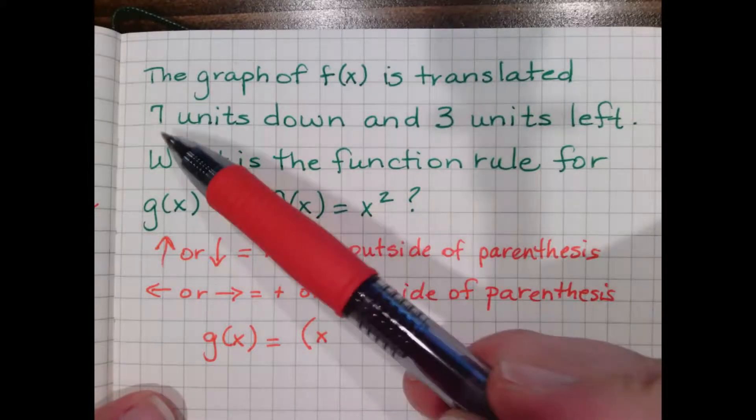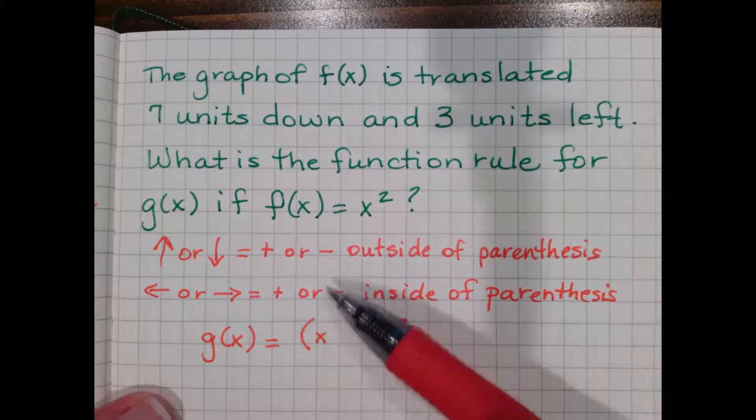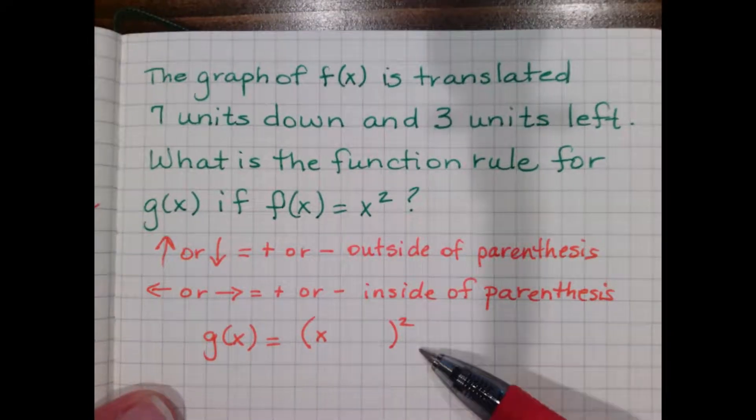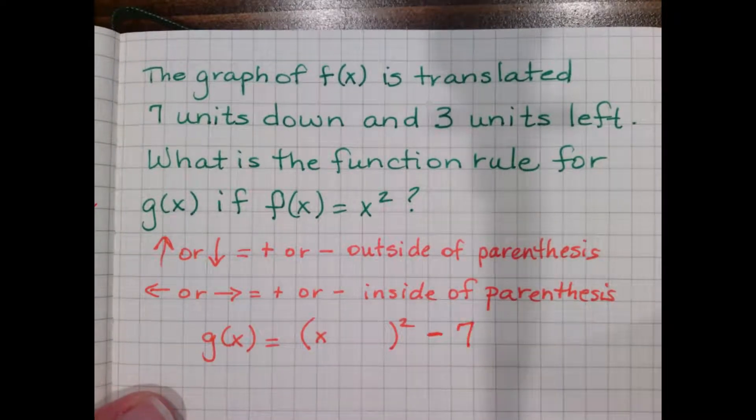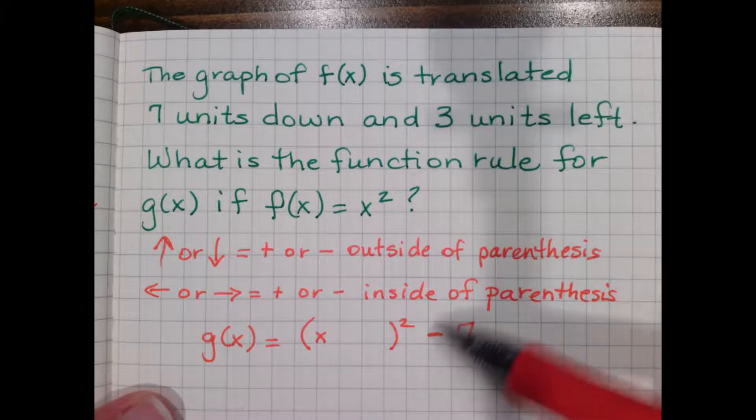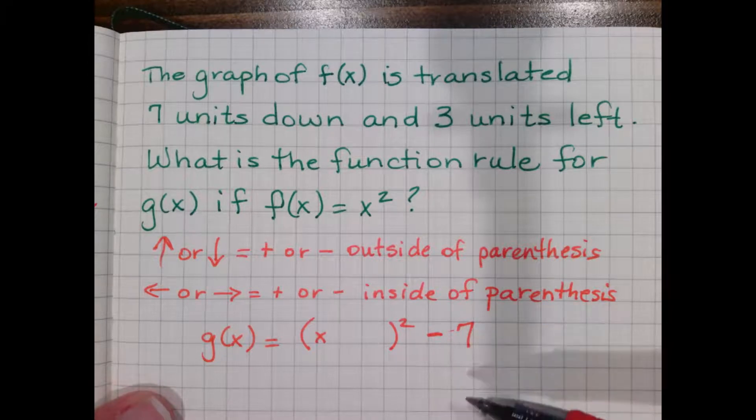So let's deal with the seven units down first. Remember, that's going to be plus or minus outside of a parentheses. That means we're going to do the down seven part over here. Because it's down, we're going to go ahead and do a minus seven. Because when you're outside of a parentheses, it's what you naturally think. Up means plus, down means minus.